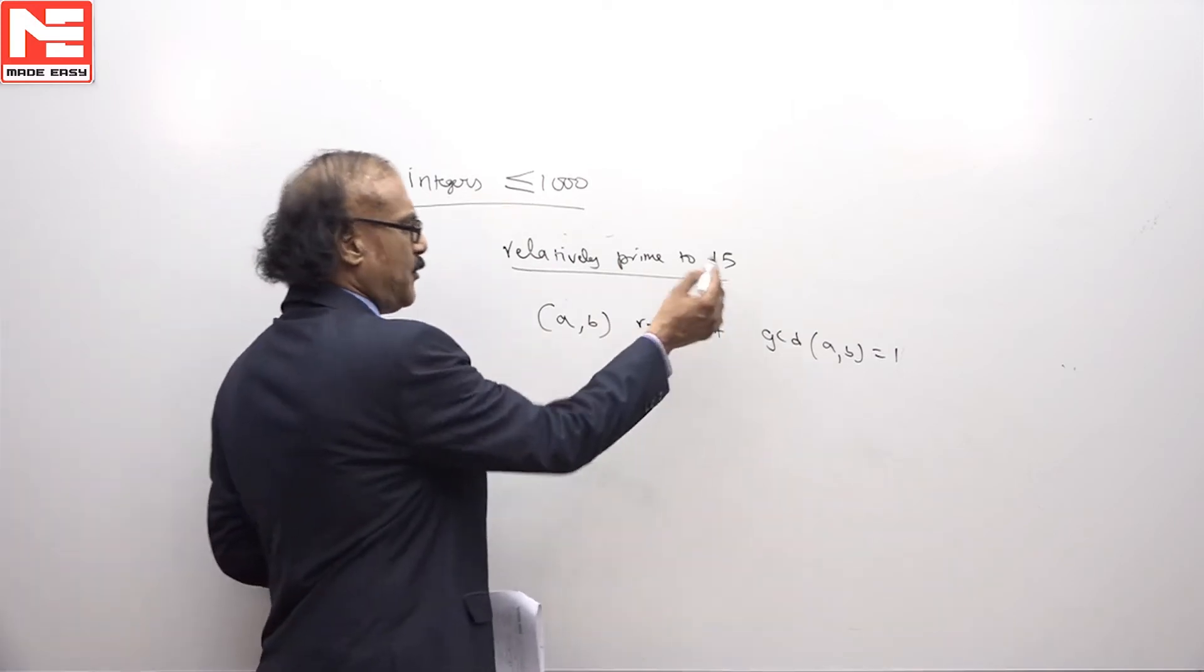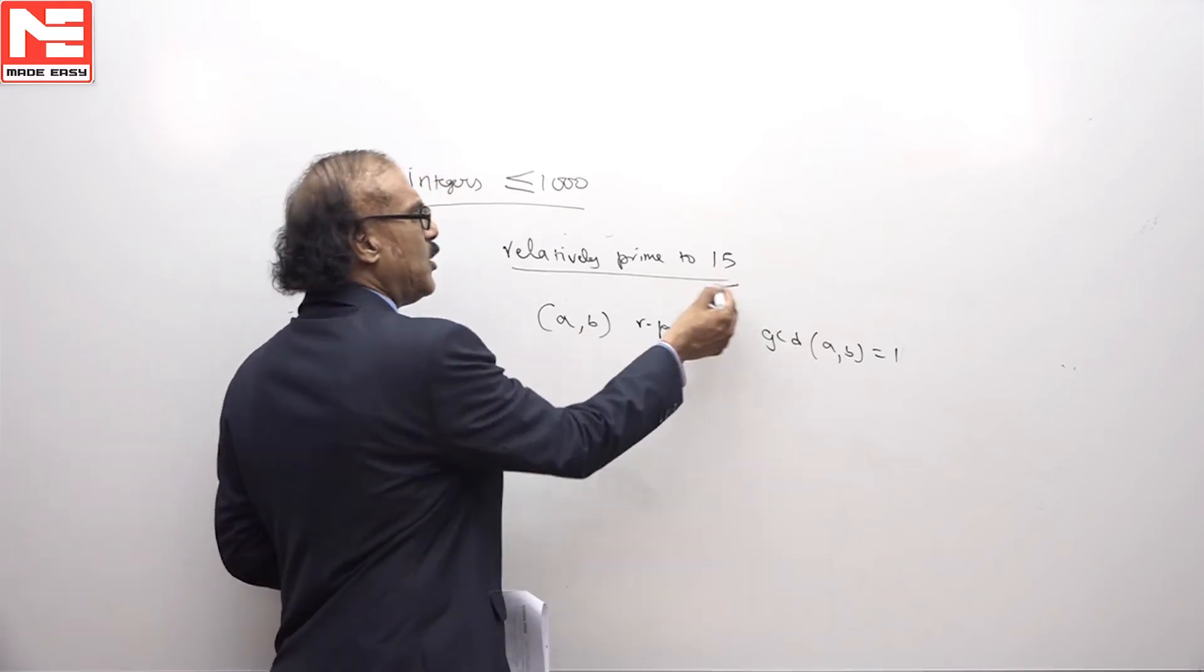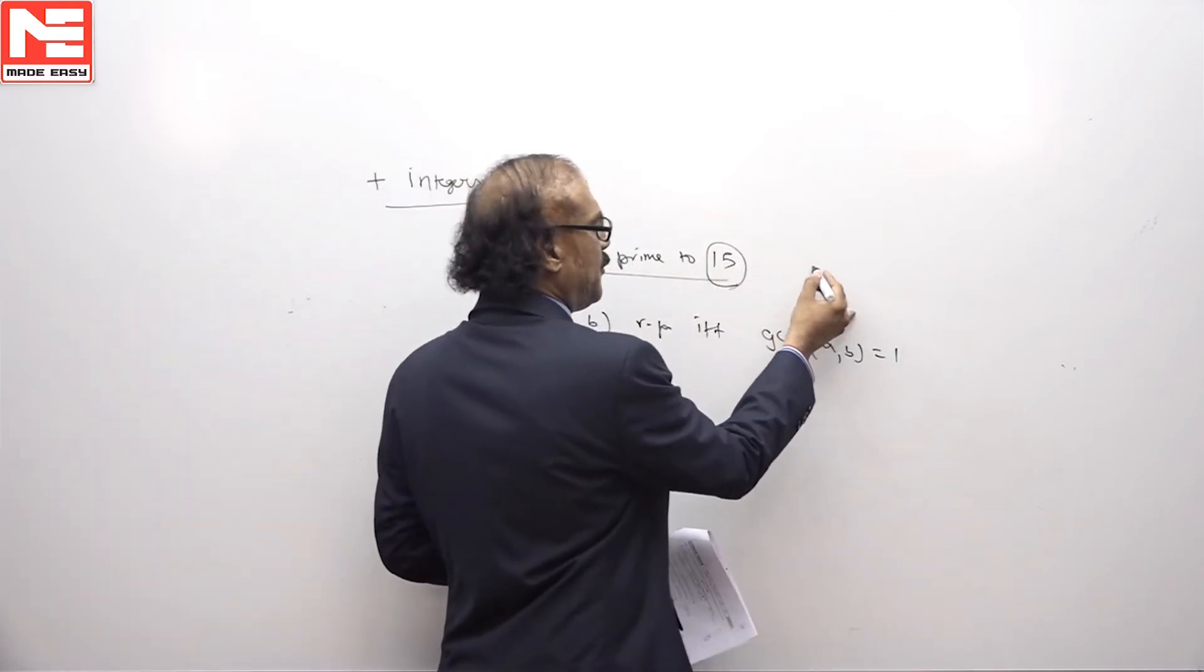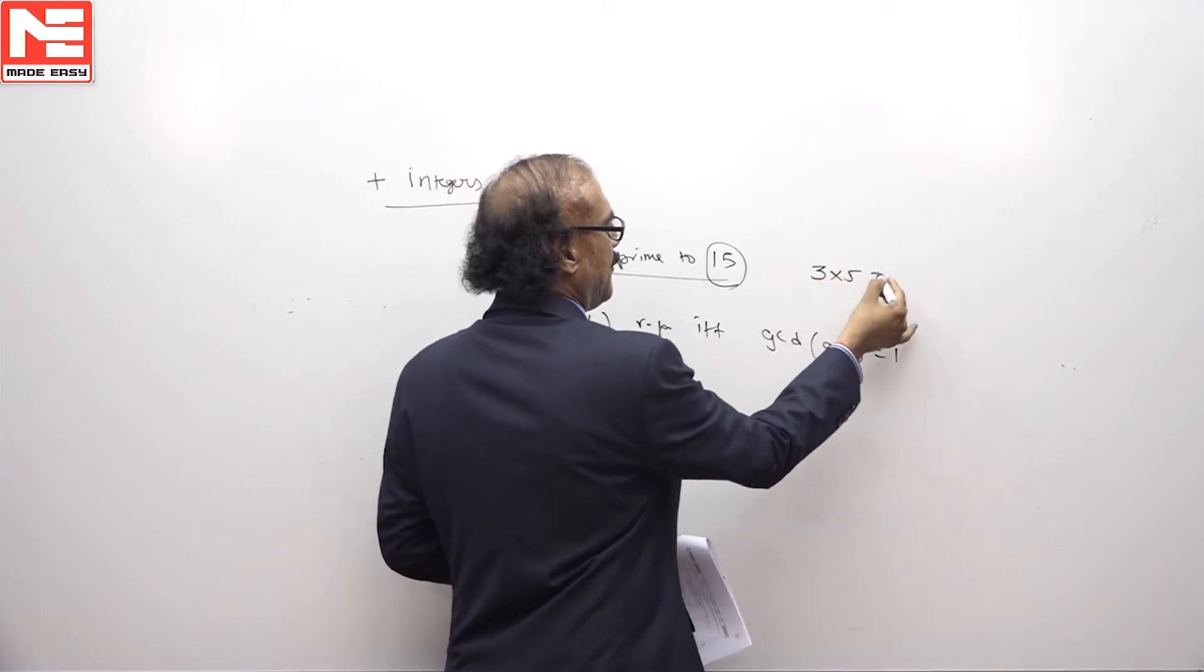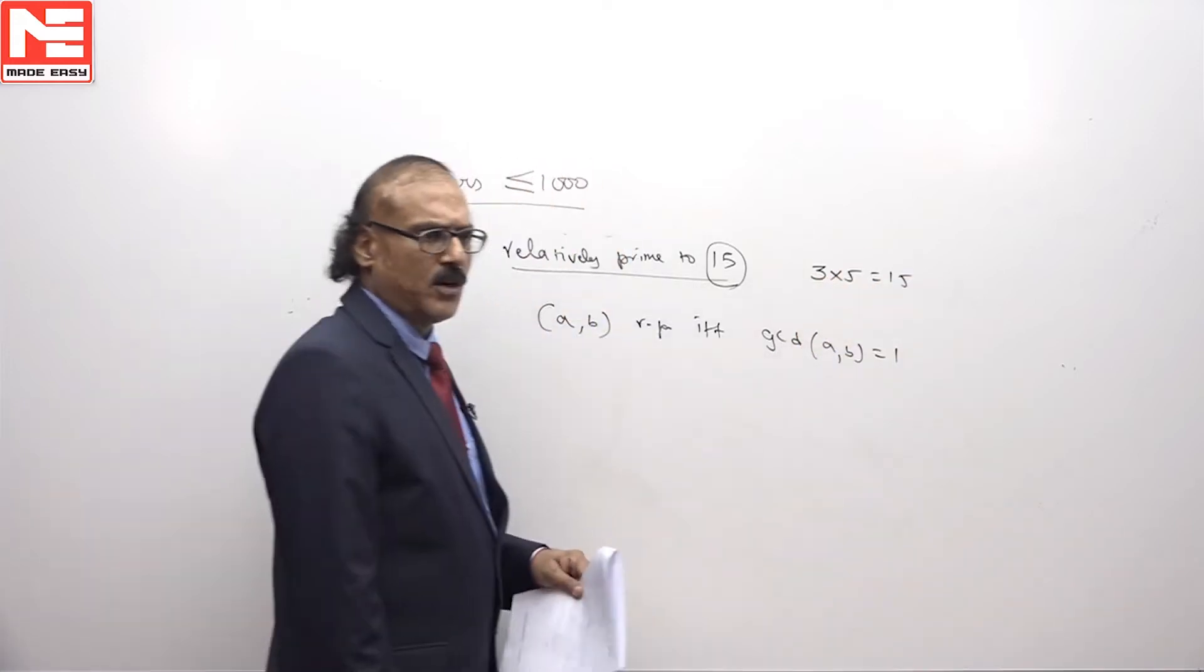To find out the numbers relatively prime to 15, we have to first find out its factors. The prime factors of 15 are 3 and 5. So 15 can be broken into 3 and 5.